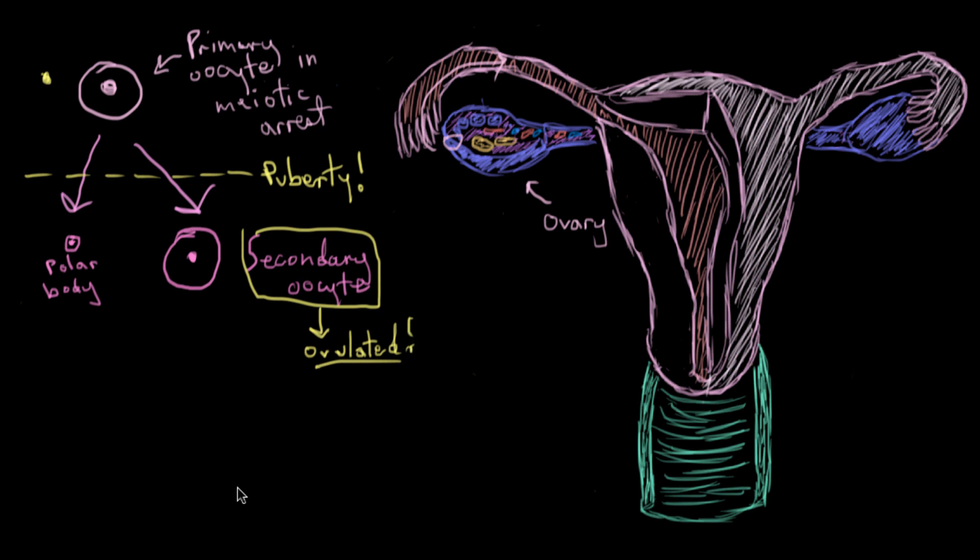And so now you might be thinking, well, meiosis is two steps, right? When does the second step happen? And that's a good question. So again, ovulation happens roughly here with the secondary oocyte coming out. And this secondary oocyte sort of just hangs out in the uterine tubes, and the sperm comes along and fertilizes the egg.